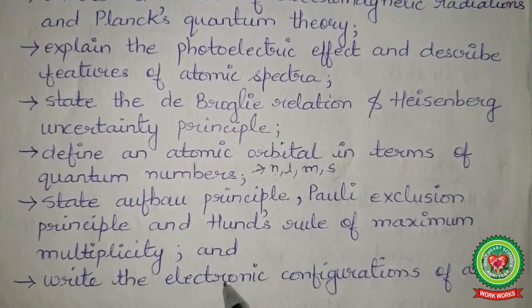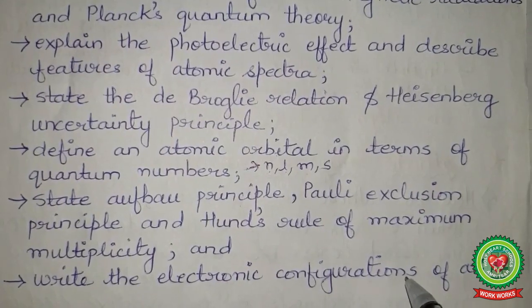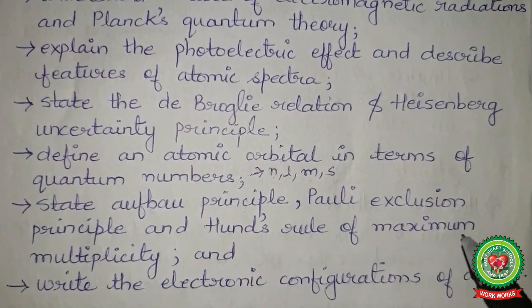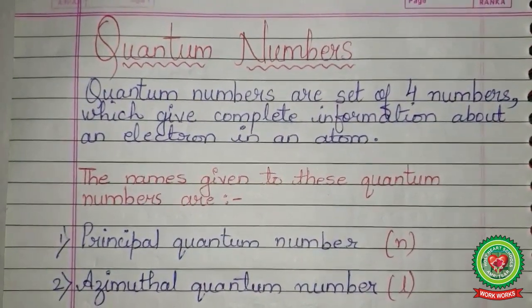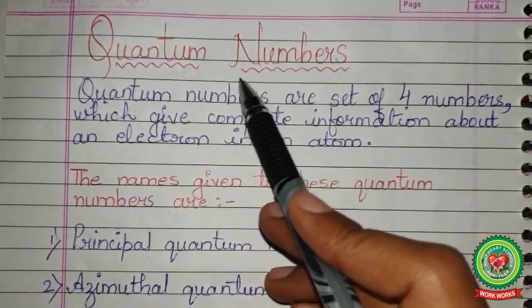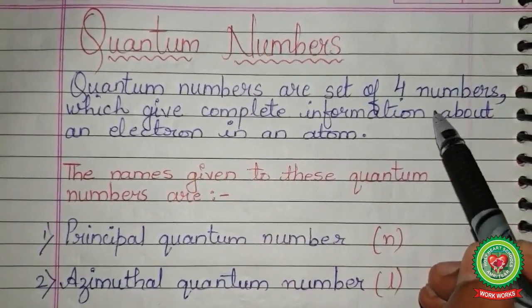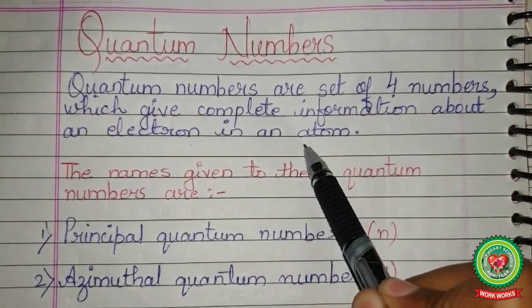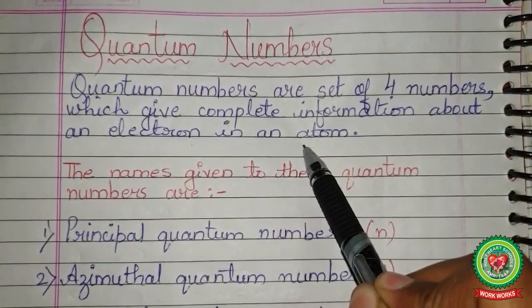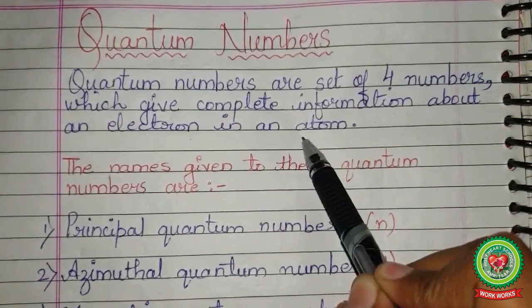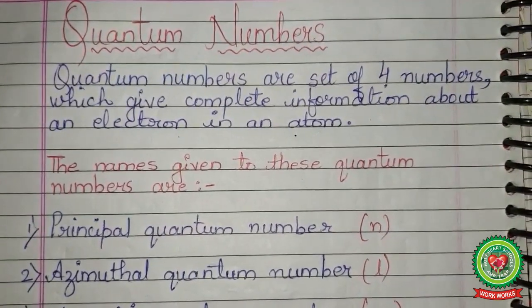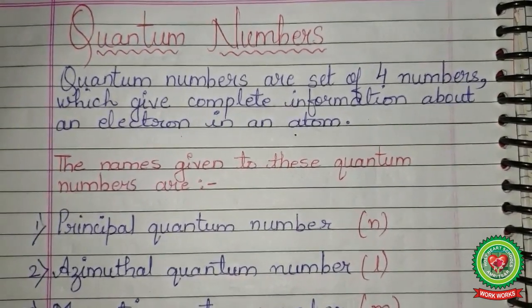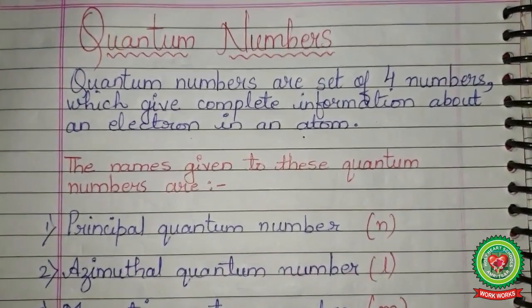Let's start with quantum numbers. Quantum numbers are a set of four numbers which give complete information about an electron in an atom. We can also say they give the 'postal address' of an electron — telling us its location, energy, shape, orientation in space, and also the spin — that is, the clockwise or anti-clockwise spin of an electron.